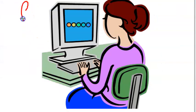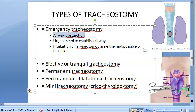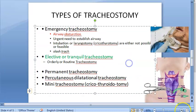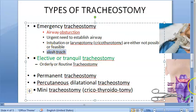The first type is emergency tracheostomy. When will you do this? When there is an urgent need to establish airway and intubation and laryngotomy are not possible or feasible. There is airway obstruction and you need to establish the airway urgently. When they say laryngotomy here, they are talking about cricothyroidotomy. Emergency tracheostomy is also called a slash tracheostomy.